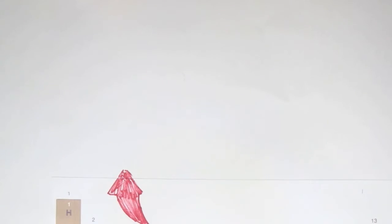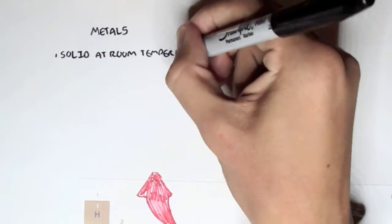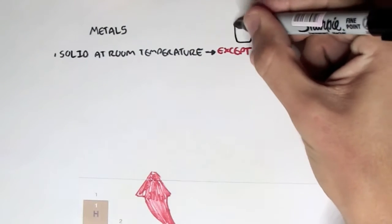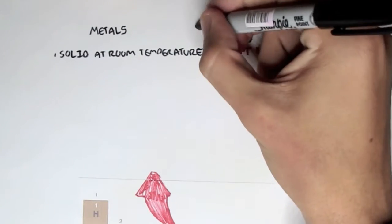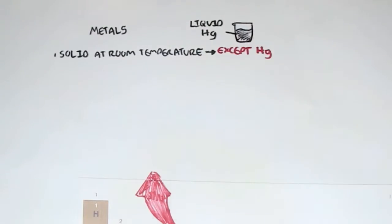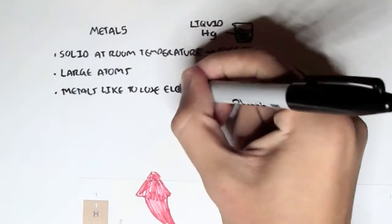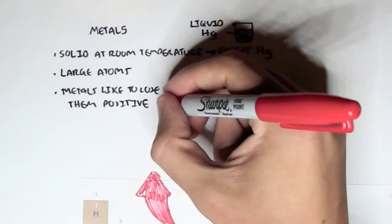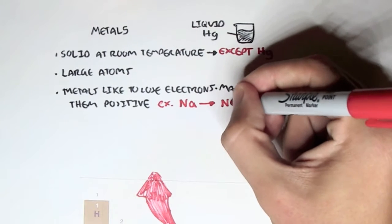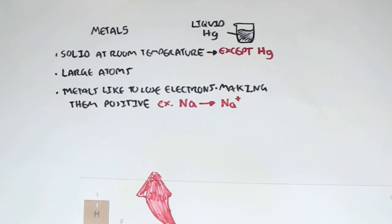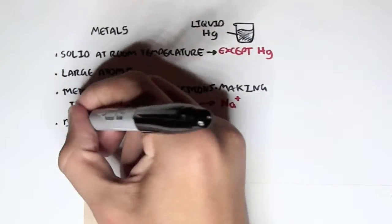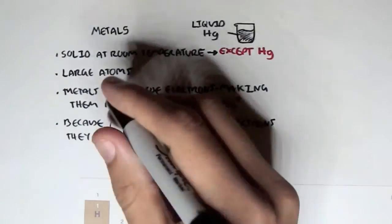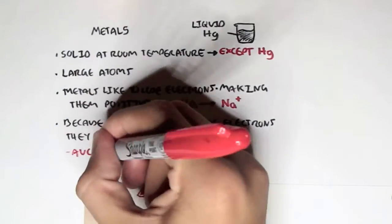First, let's look at metals. Metals are solid at room temperature, except for one particular metal known as mercury, chemical symbol Hg, which is liquid at room temperature. Metals tend to be large atoms. Metals like to also lose electrons, they like to give away electrons, making them positive. For example, sodium, chemical symbol Na, will typically want to give away electrons, one electron, to make it Na+. Because metals like to lose electrons, they have metallic properties such as being lustral, malleable, and being good conductors.